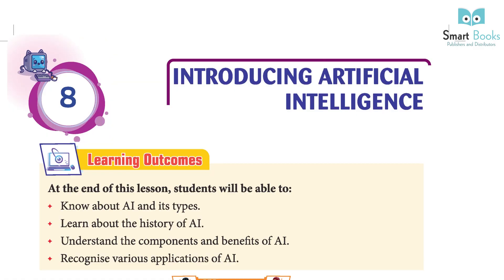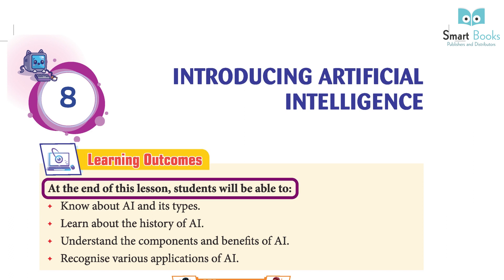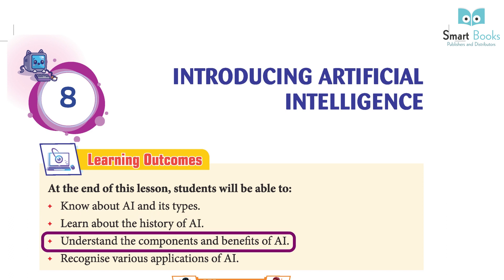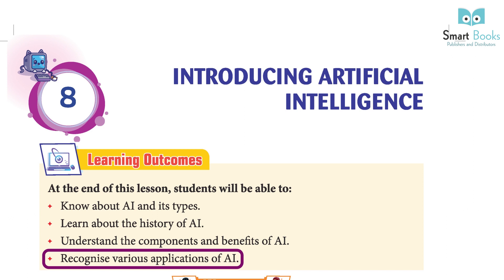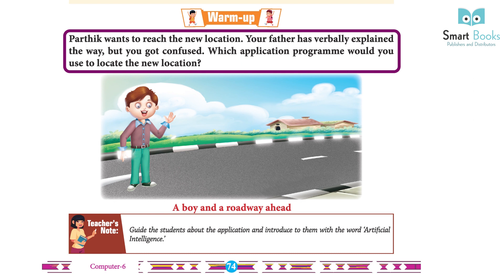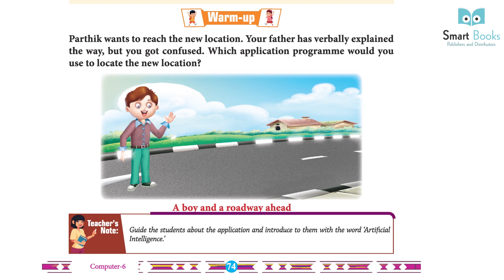Chapter 8: Introducing Artificial Intelligence. Learning Outcomes: At the end of this lesson, students will be able to know about AI and its types, learn about the history of AI, understand the components and benefits of AI, and recognize various applications of AI. Warm up: Patek wants to reach a new location. His father verbally explained the way, but he got confused. Which application program would you use to locate the new location? Teacher's note: Guide the students about the application and introduce them to the word artificial intelligence.